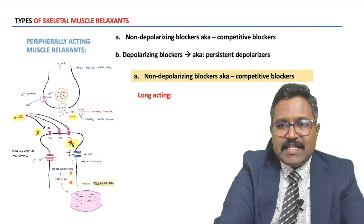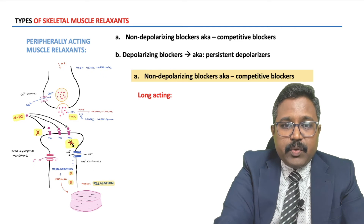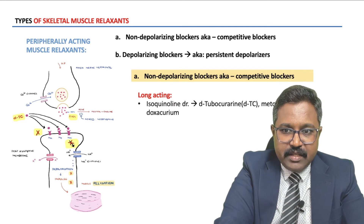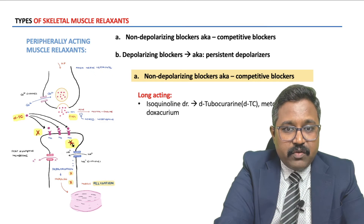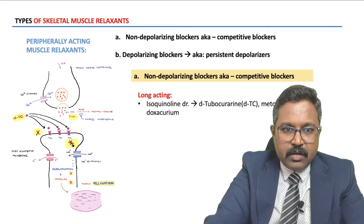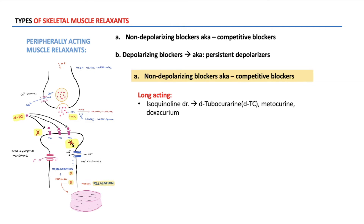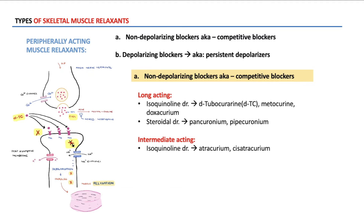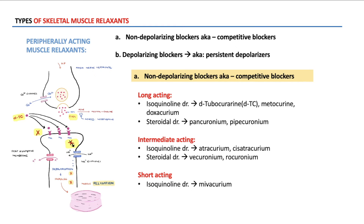Non-depolarizing blockers are classified based on their duration of action. Long-acting agents include isoquinolone derivatives such as D-tubocurarin, metocurine, and doxacurium — with D-tubocurarin as the prototype drug — and steroidal derivatives such as pancuronium and pipecuronium. Intermediate-acting drugs include isoquinolone derivatives like atracurium and cis-atracurium, and steroidal derivatives vecuronium and rocuronium. Short-acting agents include the isoquinolone derivative mivacurium and steroidal derivative rapacuronium.